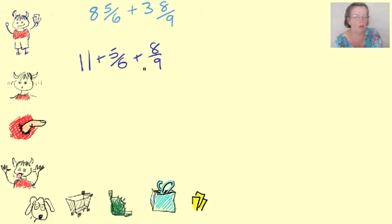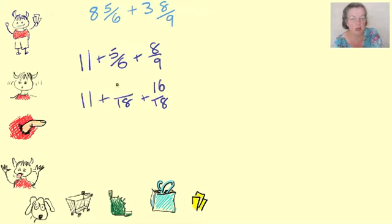So what number will both six and nine go into? Eighteen. Well done. So it's eleven over eighteen, over eighteen. Multiply the bottom by two. Multiply the top by two. Multiply the bottom by three. Multiply the top by three.